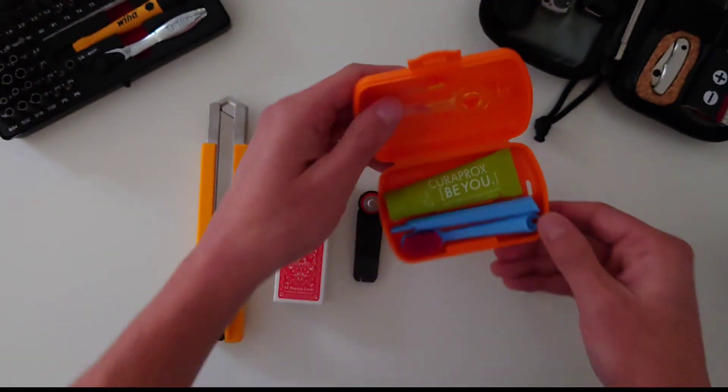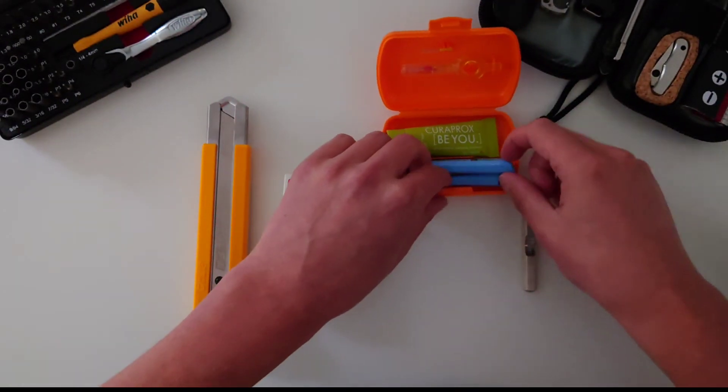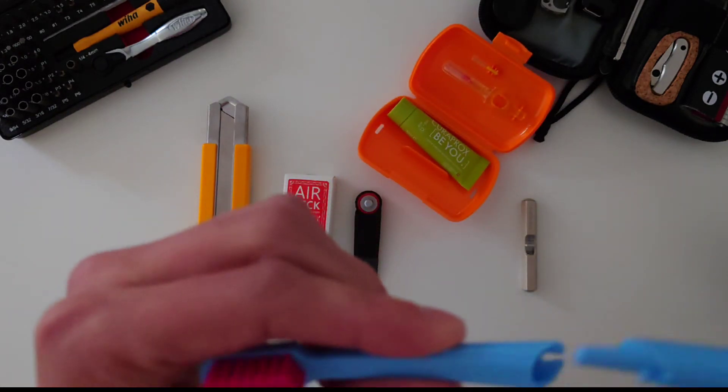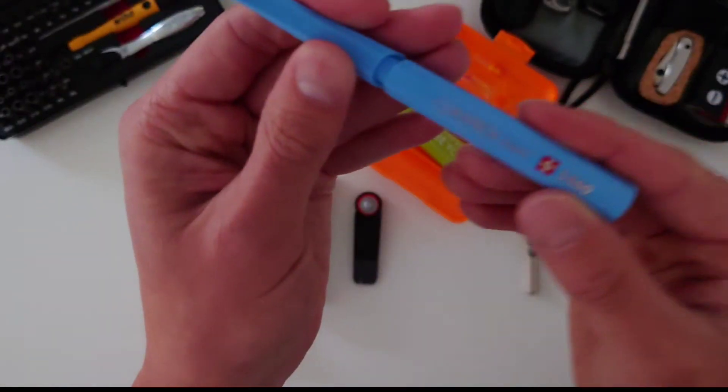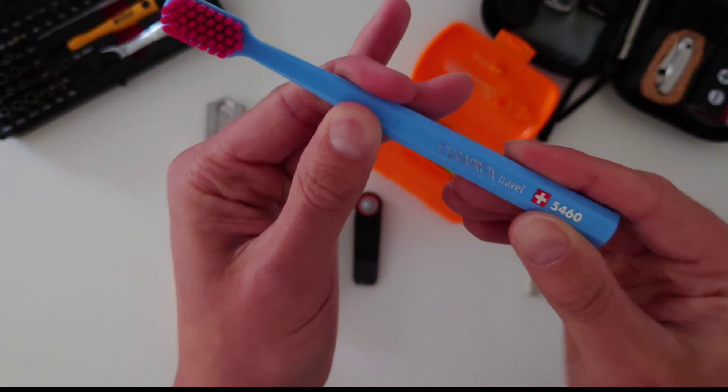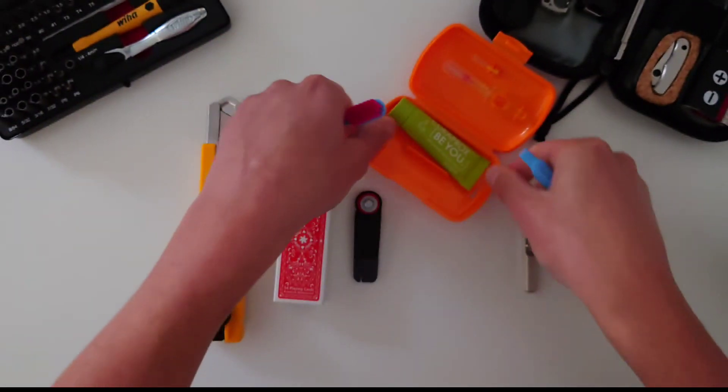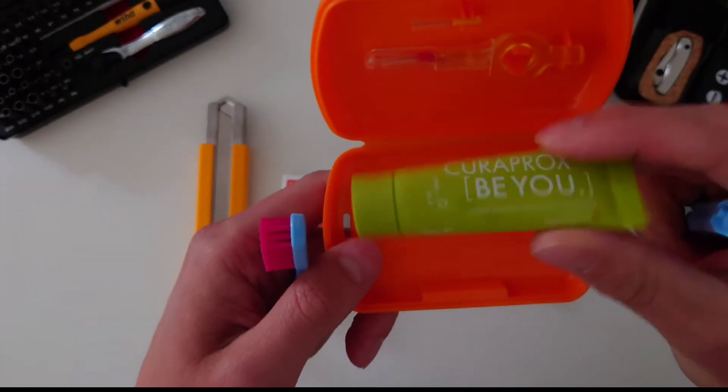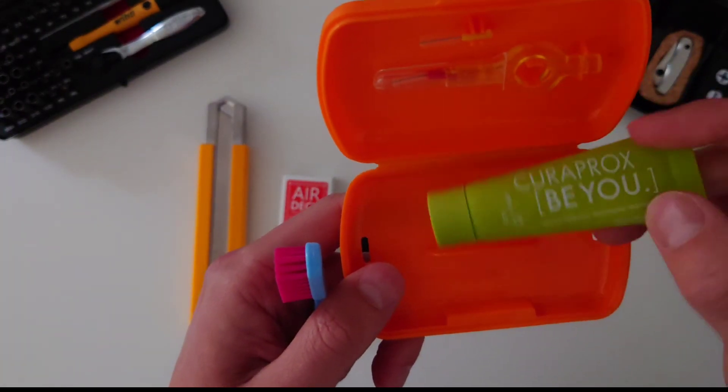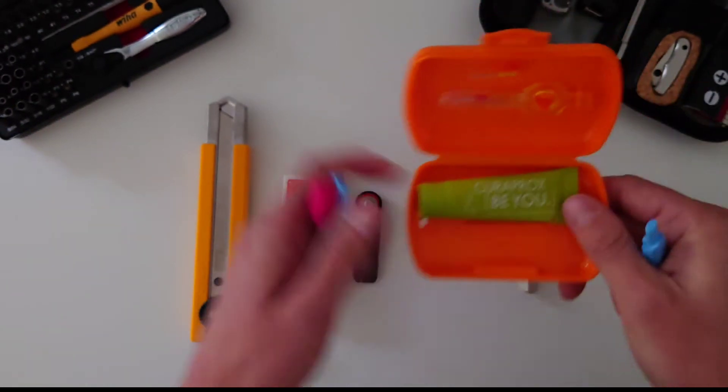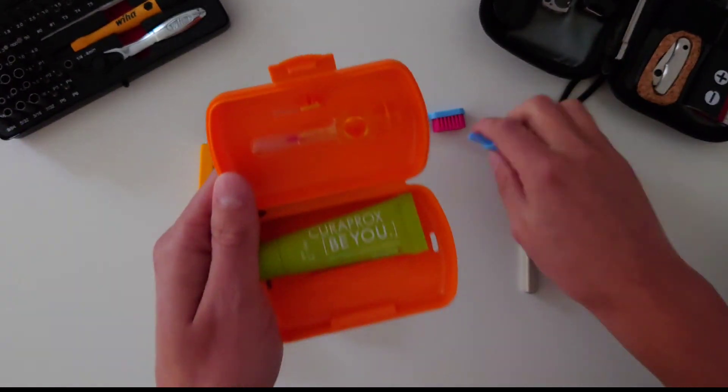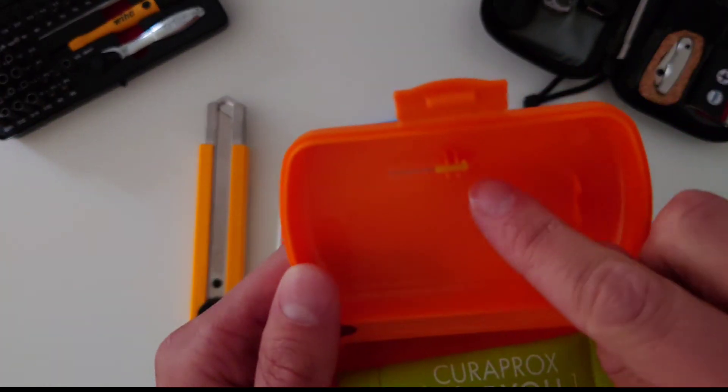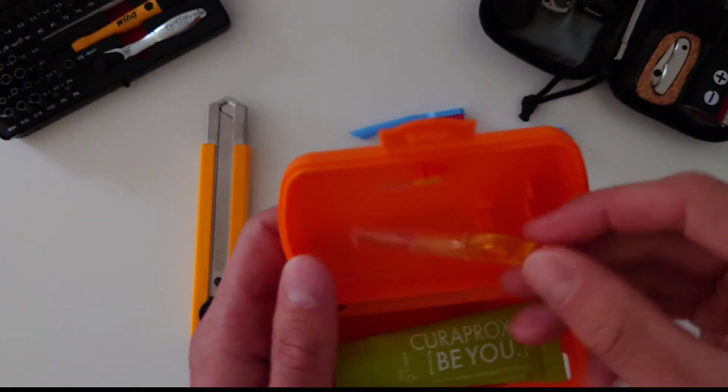So I've got a folding toothbrush, which just snaps together like so. A little tube of toothpaste, the interdental brush, and then just inside there, there's a replacement tip as well.